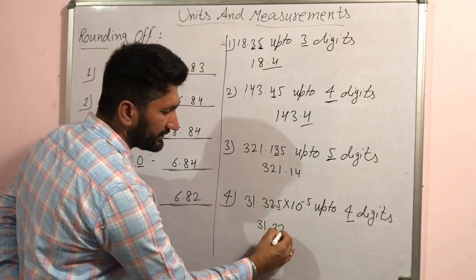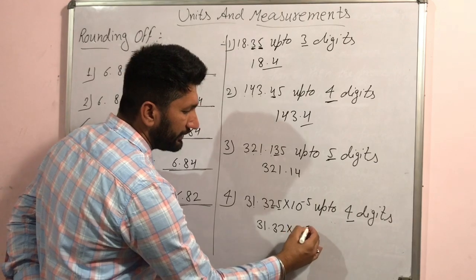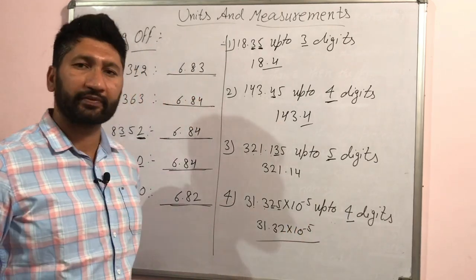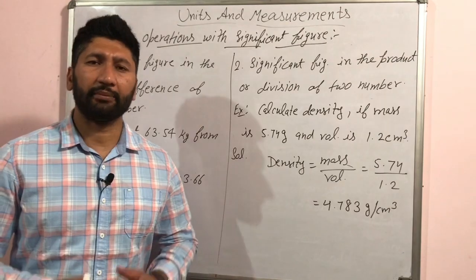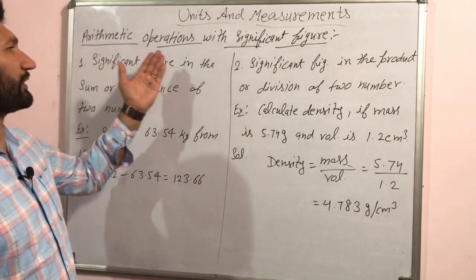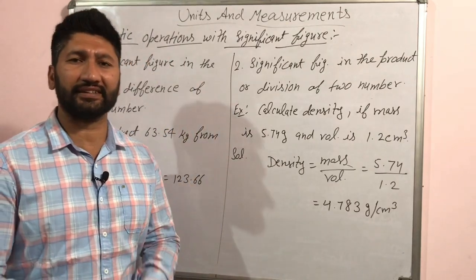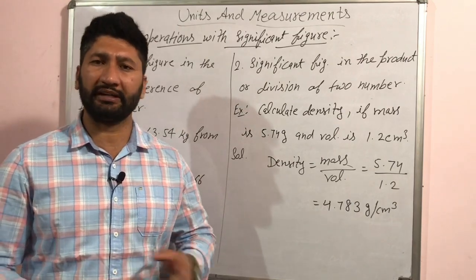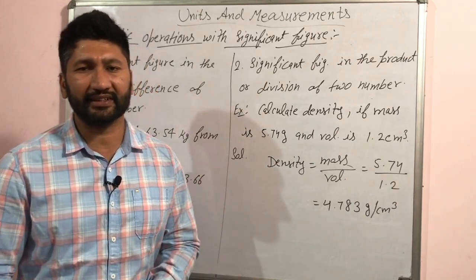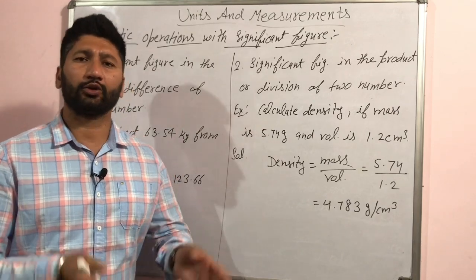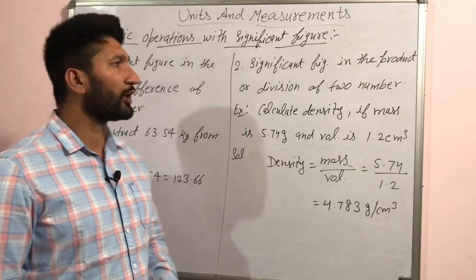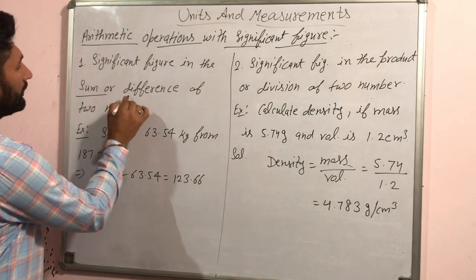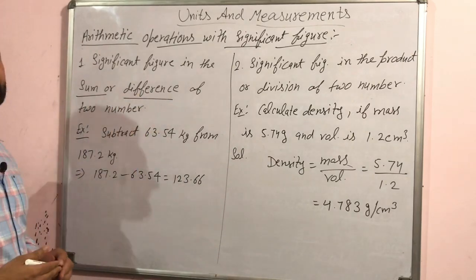So the answer for 321.3115 rounded off is 321.312. Now moving on to arithmetic operations with significant figures — multiplication and division round off rules. For addition, the result should have the same number of decimal places as the term with the minimum decimal places.